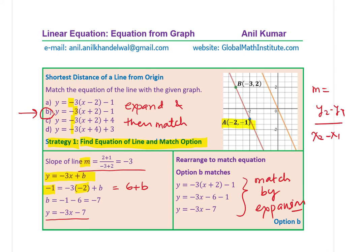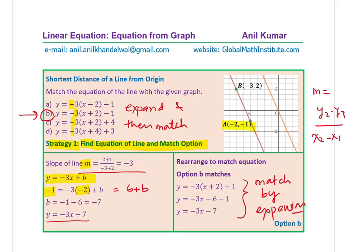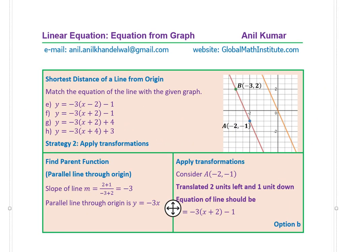Now here is a direct method, which we call Strategy 2. We're going to apply the transformations to get the equations directly. What we're assuming here is we're looking for the parent function—a line which goes through the origin itself, parallel to our line. What is the equation of that line?